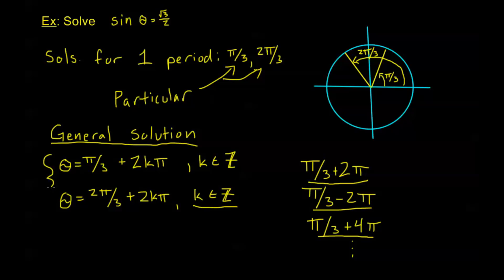These two expressions together are the general solution for sine of theta equals the square root of 3 over 2. Not only are all of these solutions, but every possible solution to the problem is included in this set. There are no other solutions other than what we've written, and we've written all of them. This is a very elegant way to write these solutions — we haven't just come up with two solutions, we've come up with infinitely many solutions, and we've been able to write down every single one of them.